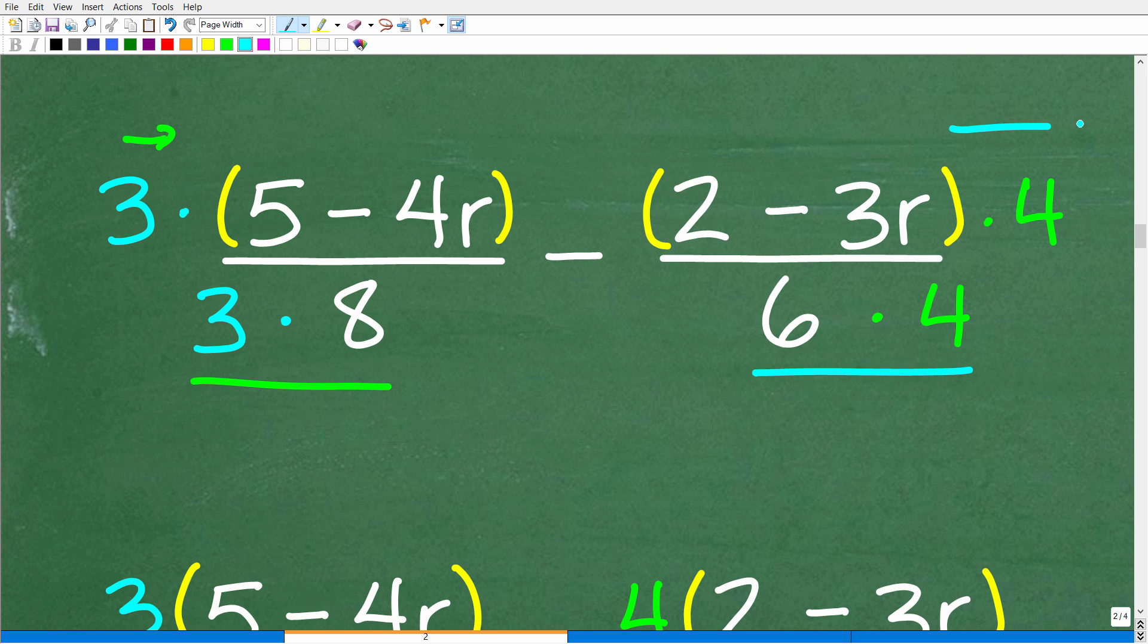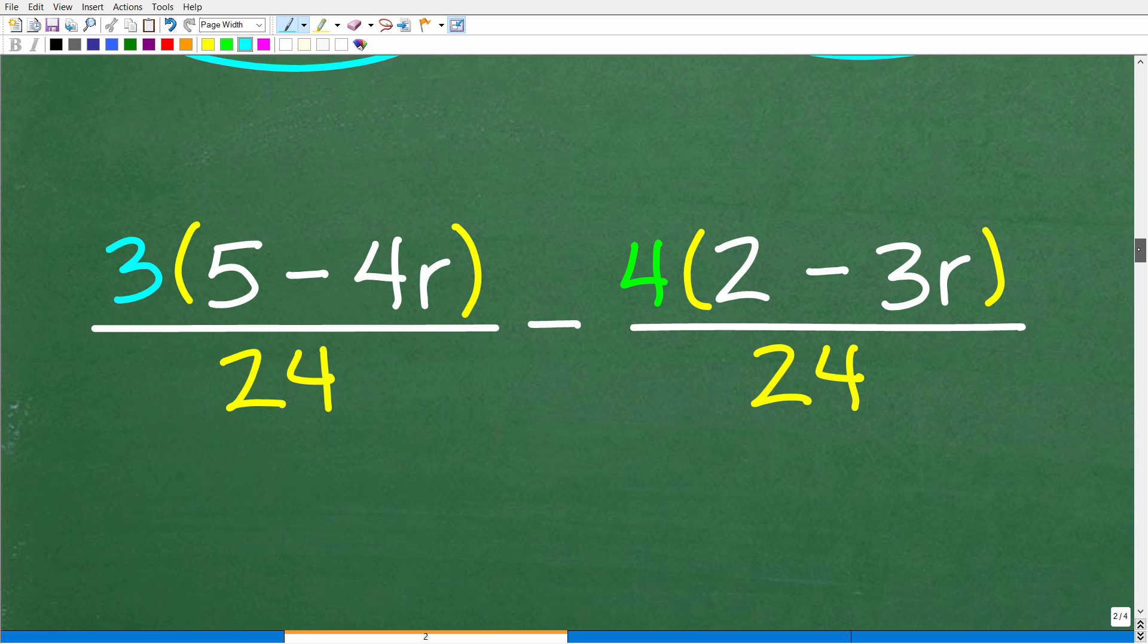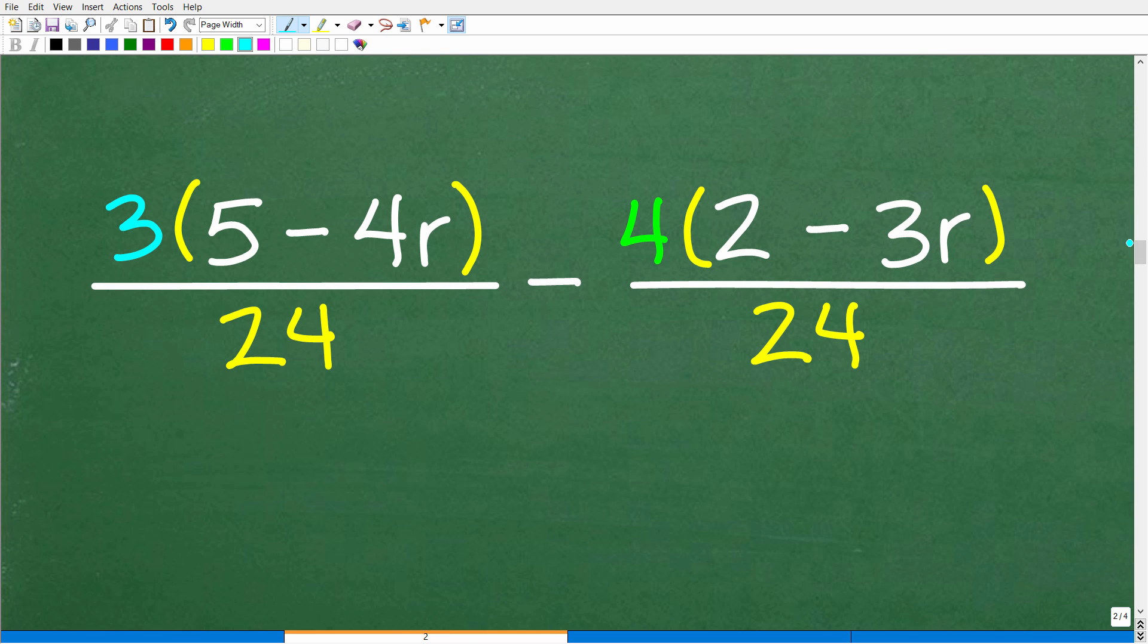So let's go ahead and take these steps. So we're going to end up with 24 here in the denominators. And we'll have three times this and four times this in our numerator. So this is the result of taking that step there. So we have three times 5 minus 4R over 24 minus four times 2 minus 3R over 24.